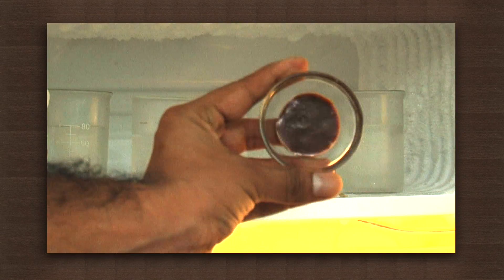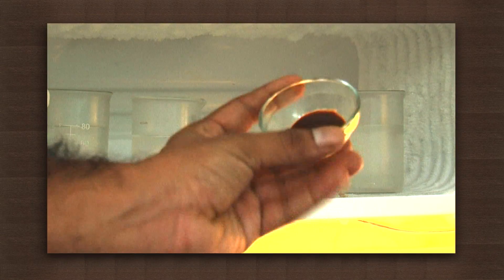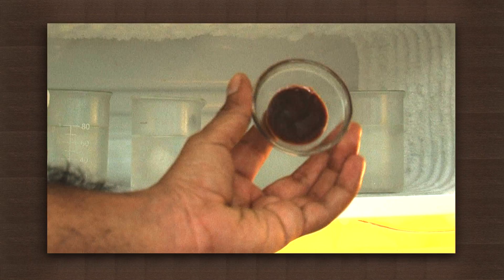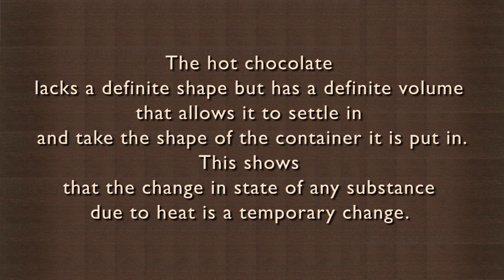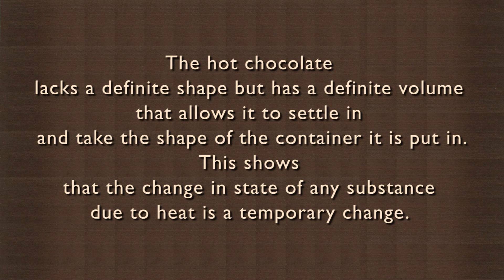After an hour the chocolate has set and taken the shape of the bowl. The hot chocolate lacks a definite shape but has a definite volume that allows it to settle in and take the shape of the container it is put in. This shows that the change in state of any substance due to heat is a temporary change.